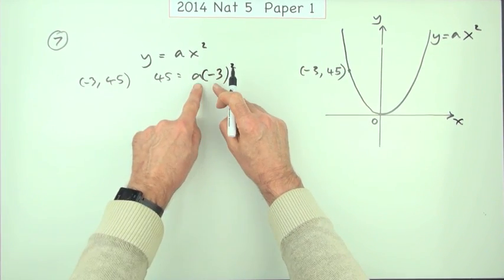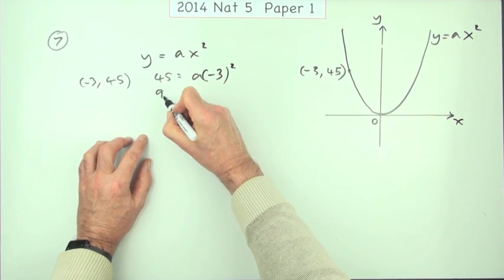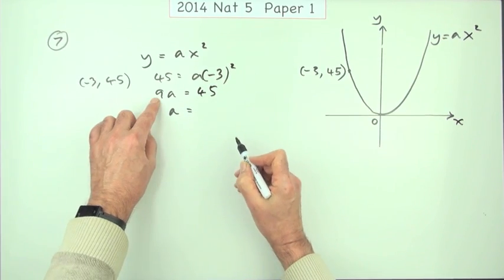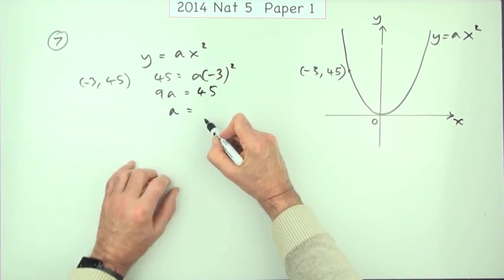Negative 3 squared is 9. So it says 9a is 45. I'll just write it the other way around. 9 times a is 45. So that means a must be 45 divided by 9.